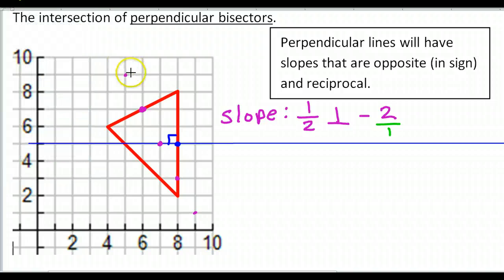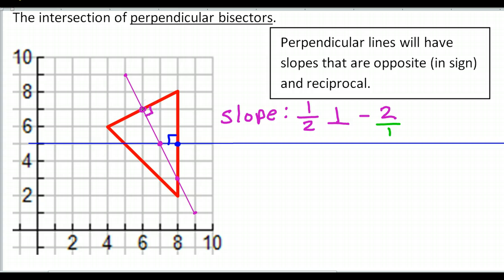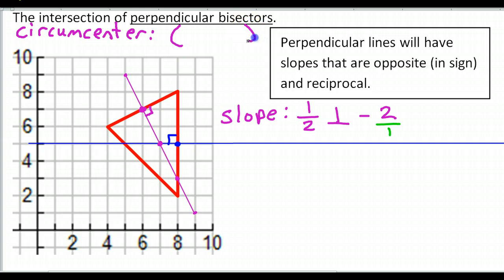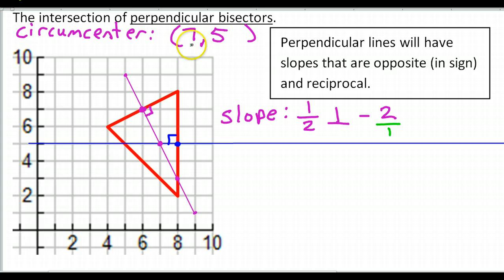Let's go ahead and draw it. Here is my perpendicular bisector. It was perpendicular to this side and it was the midpoint, so it will be a bisector. The circumcenter is going to be the point 7 comma 5. You did two perpendicular bisectors, you see where they meet — that's enough to be guaranteed that this is the circumcenter. You don't have to do the third one.